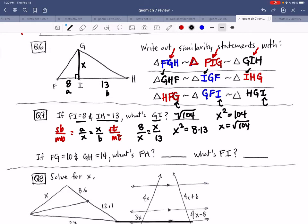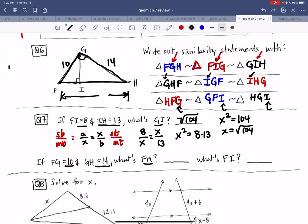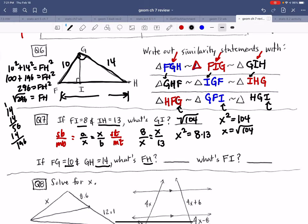Next question. I'm just going to reuse this same picture. FG is 10, GH is 14. What is FH? This is the third side of a triangle and I know two of the three sides. So to solve for FH, I would take 10² + 14² = FH². So 100 + 196 = 296. So x = √296.